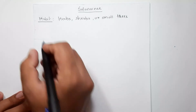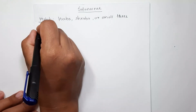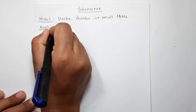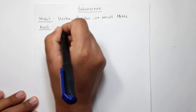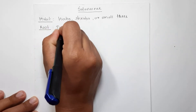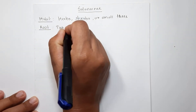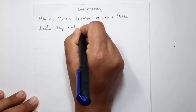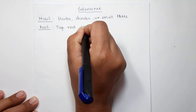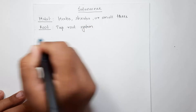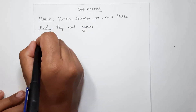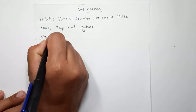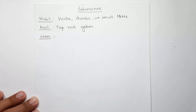The next one is the root. The root of the Solanaceae family is the typical tap root system. As the Solanaceae family belongs to dicotyledon, it shows the typical tap root system.